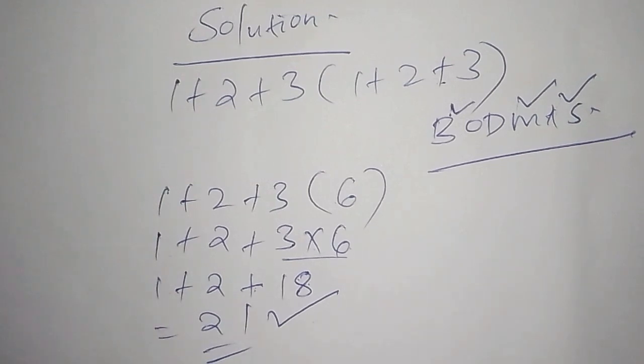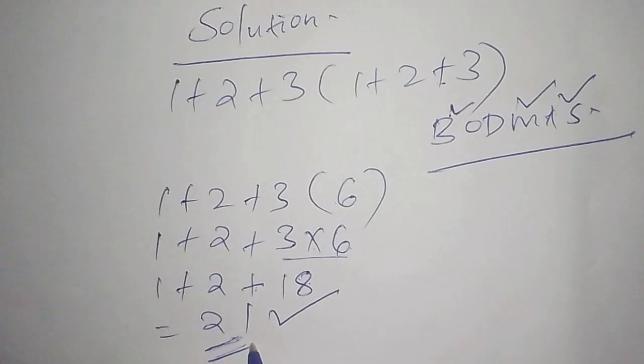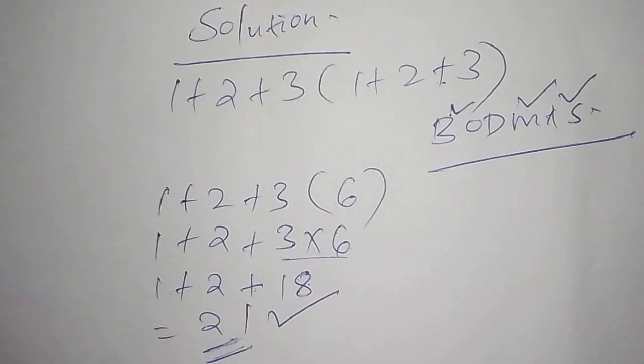So now 21 becomes the correct answer, but not the other way around, simply because we work out the bracket first, then after working out the bracket first we opened the bracket, then from there we now added the entire number.